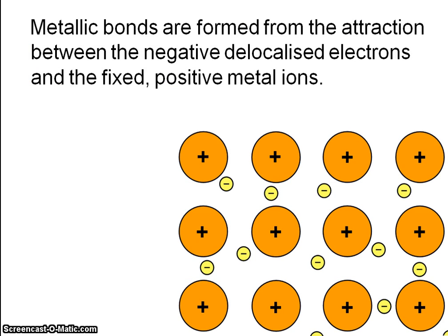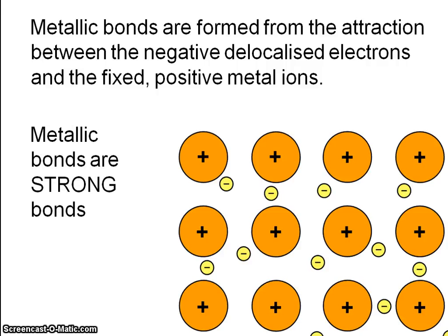Here's the diagram again. You've got the positive ions surrounded by negatively charged electrons, and this is the metallic bond. Metallic bond is the attraction between those negatively charged delocalized electrons and those positive metal ions. The metallic bond is a strong bond.